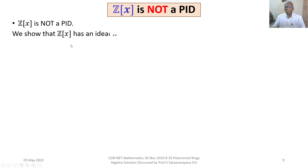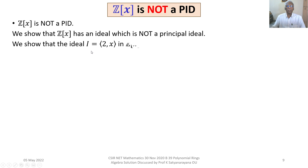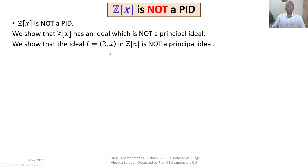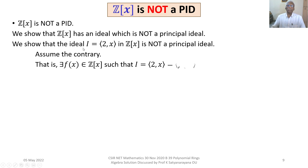To prove Z[X] is not a PID, we exhibit an ideal which is not a principal ideal. Consider the ideal I generated by 2 and X in Z[X], where 2 is a constant polynomial and X is a polynomial of degree 1. We will show this ideal is not a principal ideal — that is, it is not generated by any single polynomial. Assume the contrary: assume I is a principal ideal generated by some polynomial F(X) in Z[X], so I = (2, X) = (F(X)).